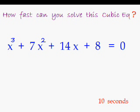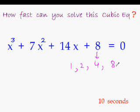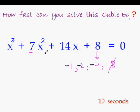Your time is over. Now I'll do it. Factors of 8 are 1, 2, 4, and 8. Since the sum of the factors is 7, we can cancel out 8 as 8 is itself greater than 7. So 4 plus 2 is 6, and 6 plus 1 is 7. So these are the factors. Just change the signs and you have solved this cubic equation. The three solutions are x equal to minus 1, x equal to minus 2, and x equal to minus 4.